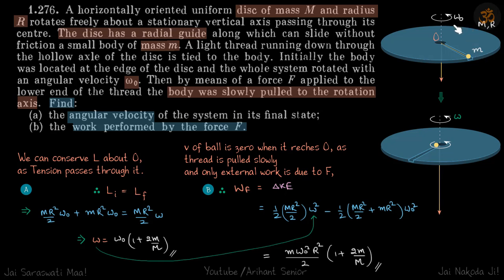So the angular momentum will be only due to the disc, that will be I of disc into omega. So let's conserve L about O as tension passes through it. Also, this tension force due to the thread which we are pulling with passes through the axis.